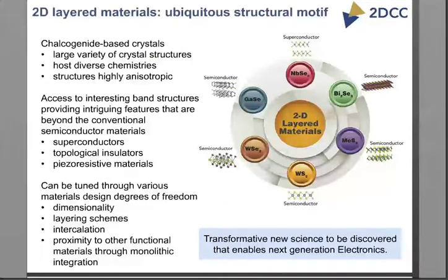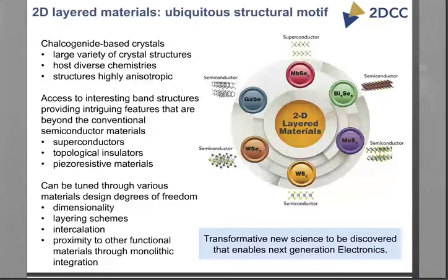The focus of this center is 2D layered materials. It turns out that this is quite a ubiquitous structural motif in chalcogenide-based crystals, so there's a large variety of crystal structures that show these layered structures. You can see here a selection of a few 2D layered materials ranging from bismuth selenide, a topological insulator, molybdenum disulfide, a semiconductor, and gallium selenide, also a semiconductor. There's quite a host of diverse chemistries with which you can populate these crystals, still maintaining very high structural anisotropy. Given this high anisotropy, we're finding access to interesting features in band structures that provide intriguing properties not typically found in conventional semiconductor materials.